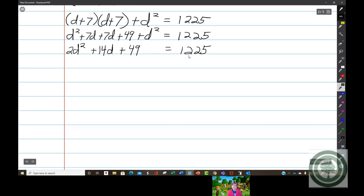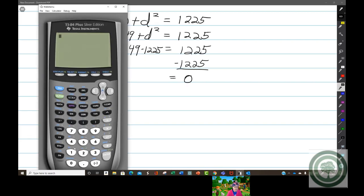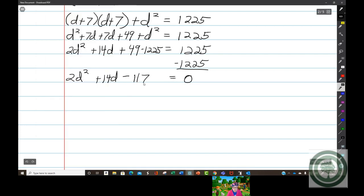I have to set it equal to 0 to solve, so minus 1225 minus 1225. That's going to be a minus because the bigger number is minus, but the calculator will take care of that. 49 minus 1225 equals negative 1176.